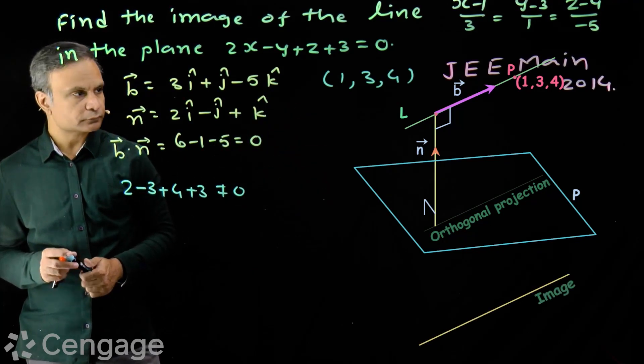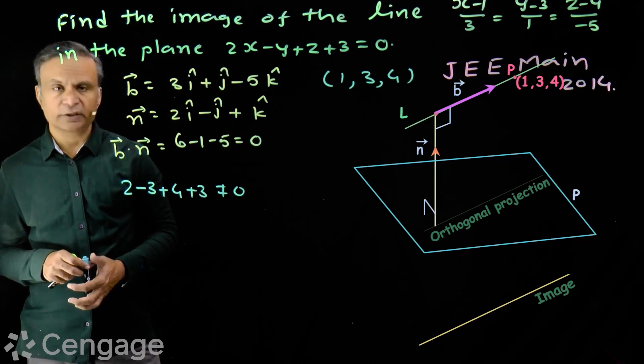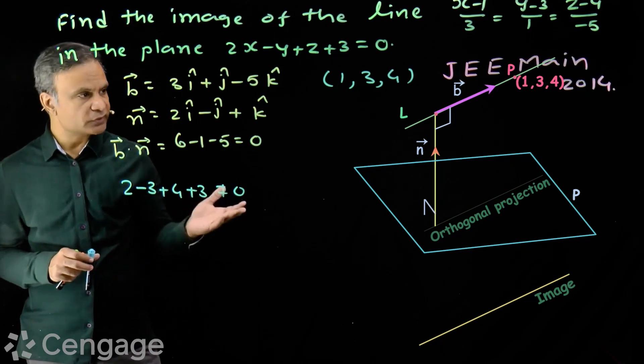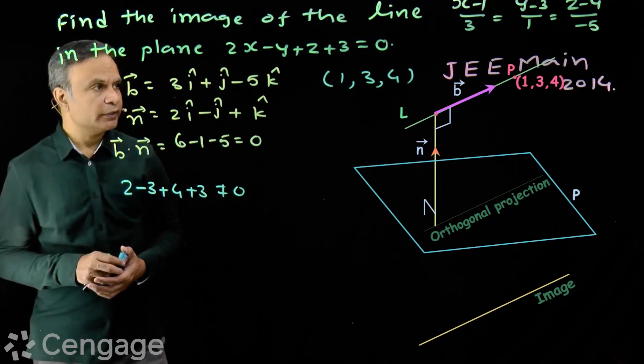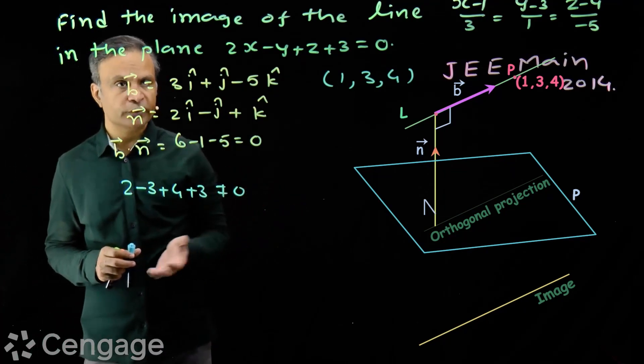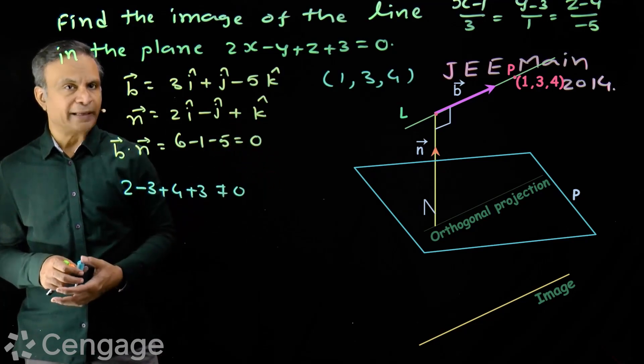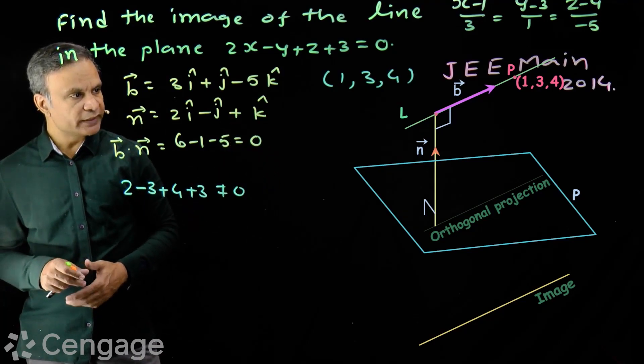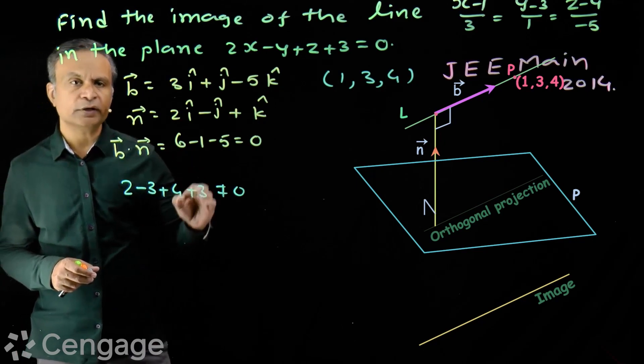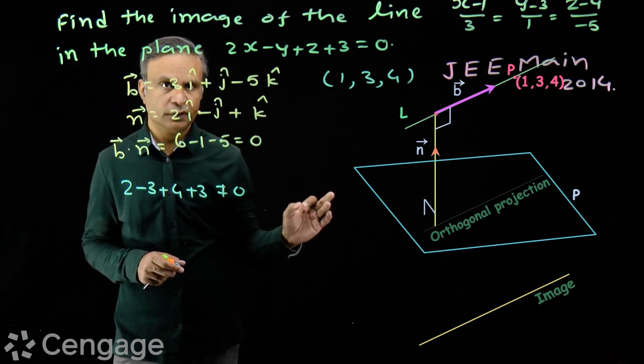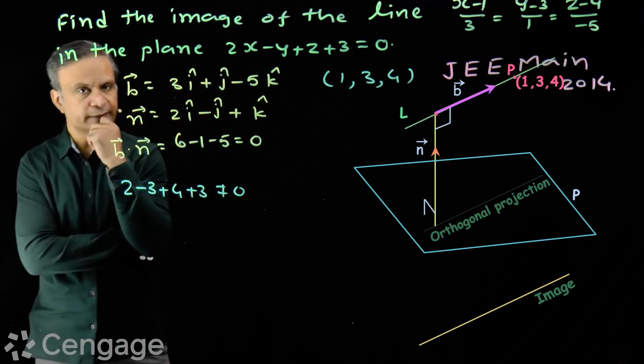Direction ratios of image will be the same. Image ke direction ratios toh same honge na, because both these lines are parallel. So now we need to find one point on the image. Hame image line ke upar ek point chahiye. Kaise nikalenge?